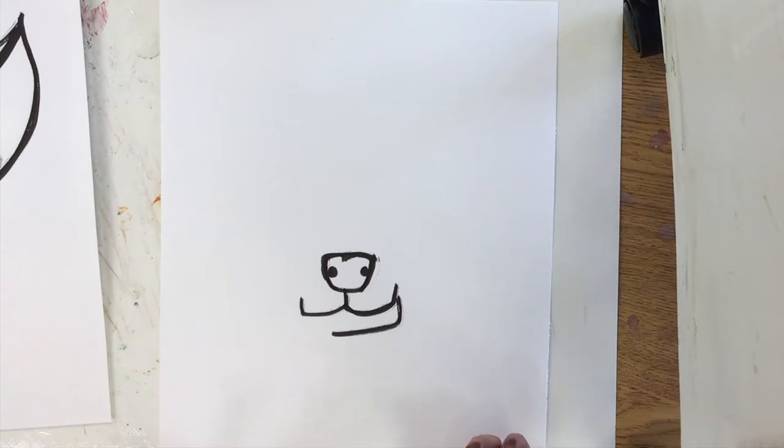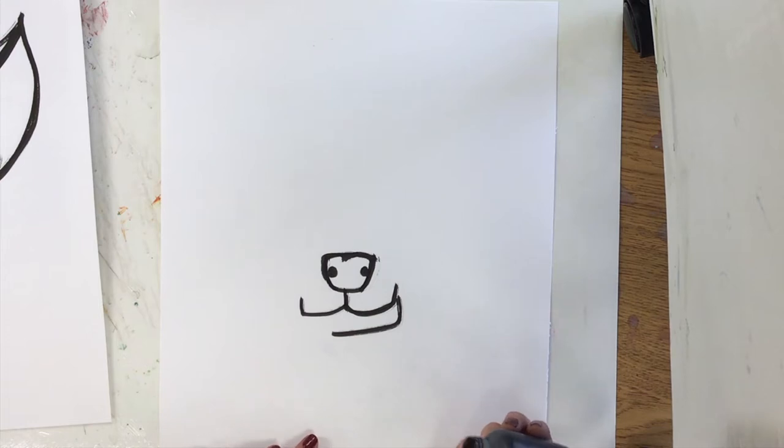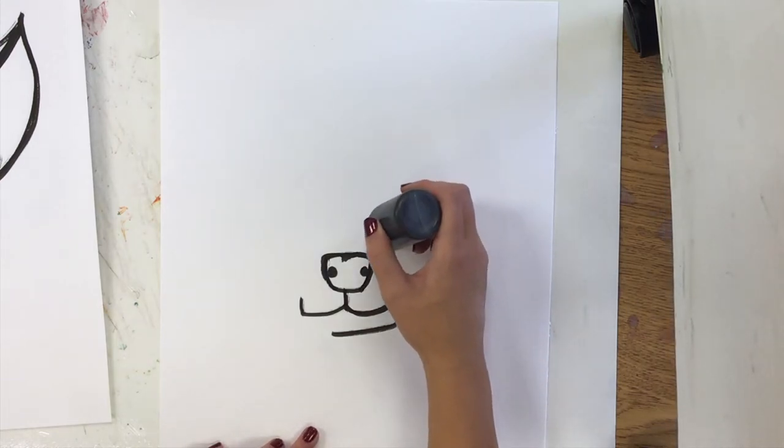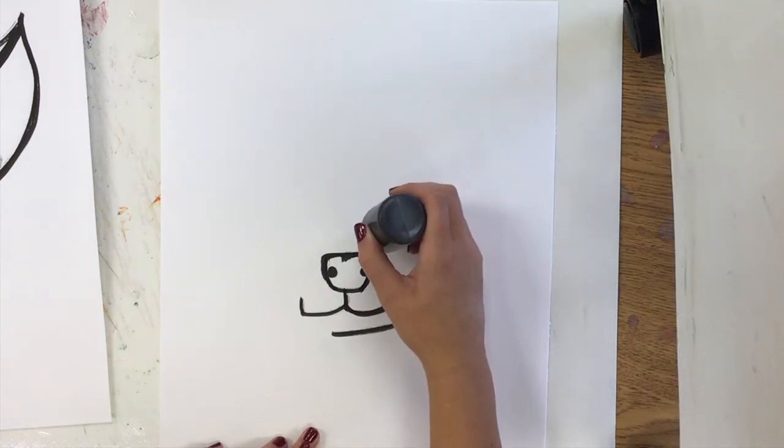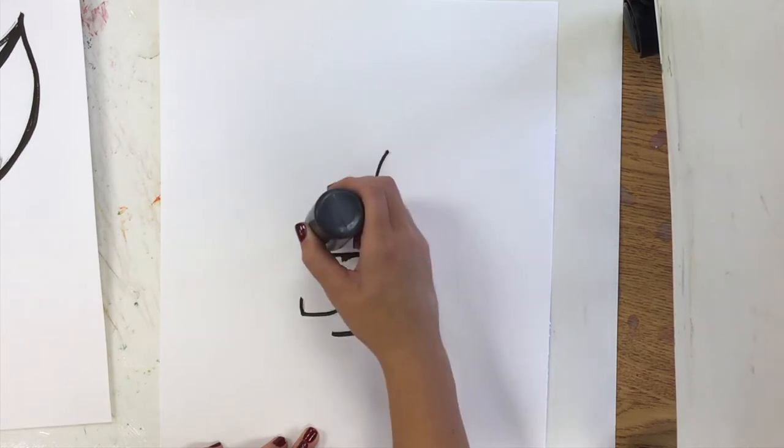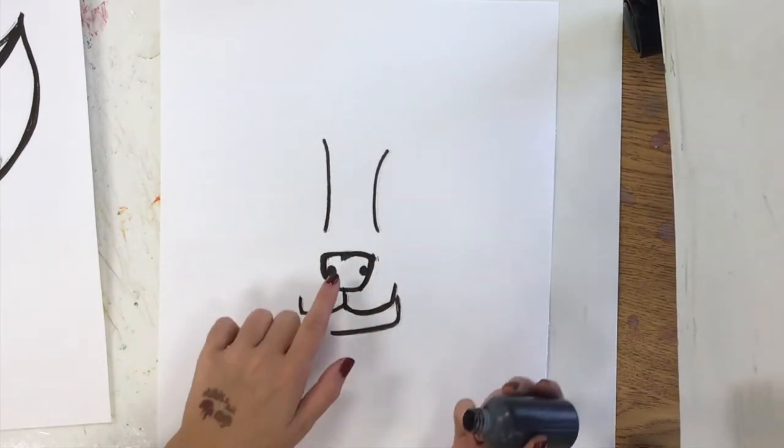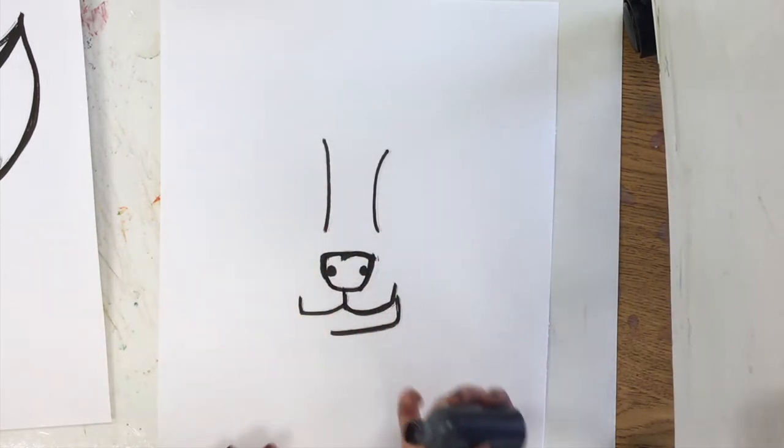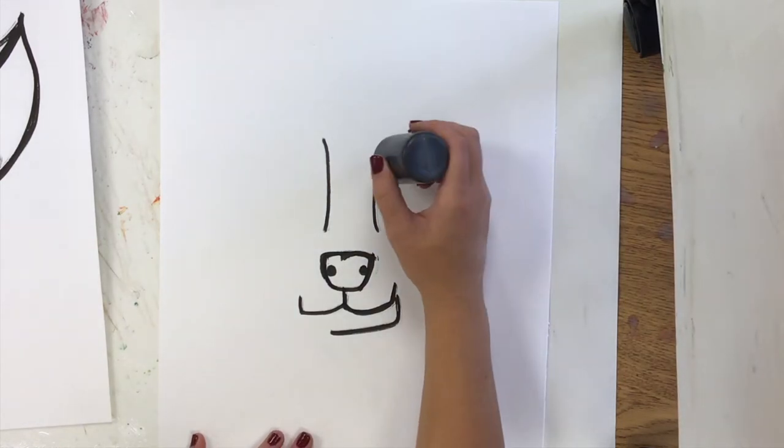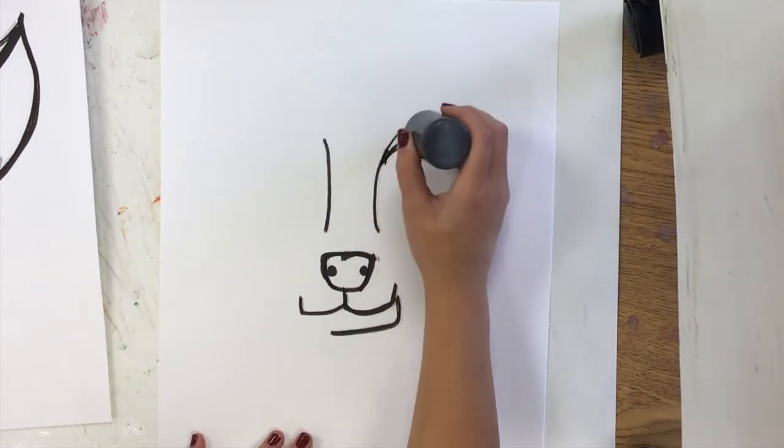Now next, we're going to draw your dog's snout. So a couple of curved lines coming up. They're not connected to the nose, but they're right there. Then to draw some hair coming from there, just draw some lines to create some texture around the dog's eyes.